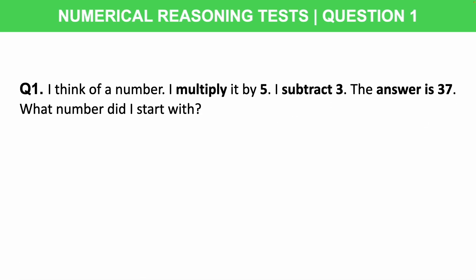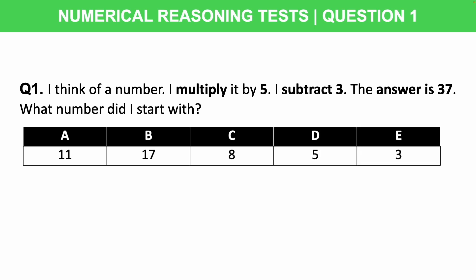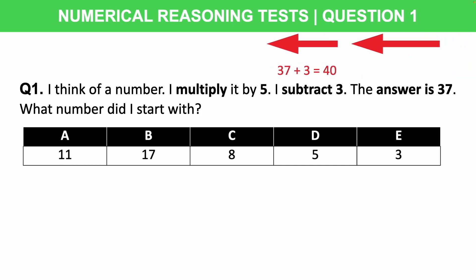Here is an example question. Question 1: I think of a number, I multiply it by 5, I subtract 3, the answer is 37. What number did I start with? Options: A) 11, B) 17, C) 8, D) 5, or E) 3. To work this out, we simply do the arithmetic in reverse order. We start with 37, and where it says subtract 3 we instead add 3, giving us 40. Then where it says multiply by 5, we divide by 5, so 40 divided by 5 gives us the answer of 8.